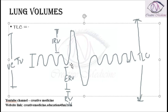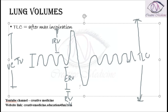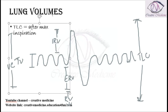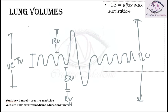After maximum inspiration, the amount of air that can be present in the lungs is total lung capacity. Residual volume is the amount of air remaining in the lungs after maximum expiration.